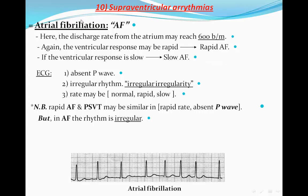In atrial fibrillation, the fibrils themselves are producing electrical activity, so there is no organized atrial depolarization to produce a definitive P-wave — therefore the P-wave will be absent. The rhythm will be irregular; this is the classic sign of atrial fibrillation — irregular irregularity, as we were taught in medical school. The rate may be normal, rapid, or slow depending on the ventricular response.